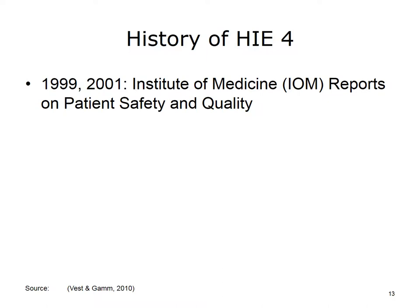In 1999, the Institute of Medicine released the first of a series of reports that ignited a national focus on patient safety and quality of care. The first report, entitled To Err is Human, suggested that as many as 98,000 people die each year as a result of preventable medical errors. A follow-up report in 2001 talked about how health information technologies, including HIE, could be used to reduce errors and improve the efficiency and effectiveness of our healthcare system. This new national focus on quality had implications for how the history of HIE continued to unfold.